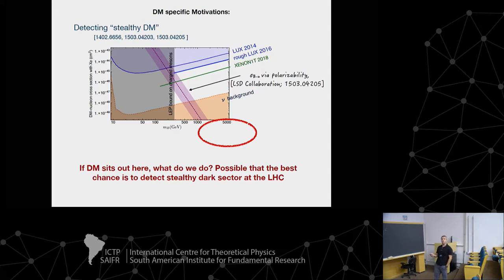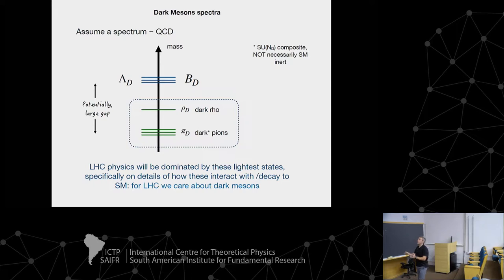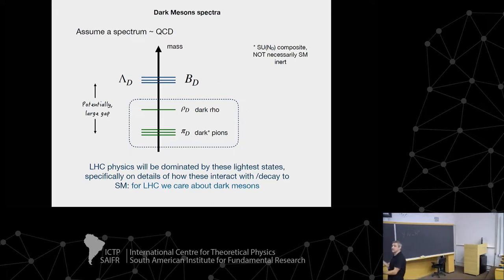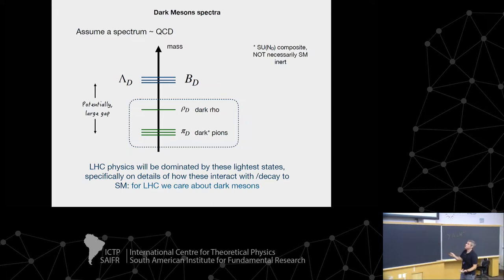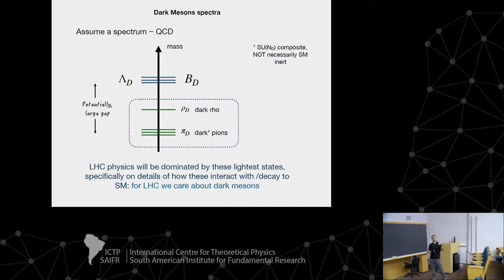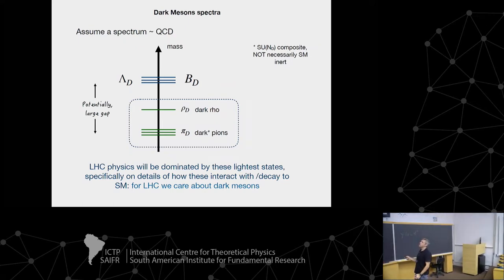So this is the motivation, one motivation. These guys are sort of the signature we would have at the LHC of what's going on here. So while that's the motivation, nothing I'm going to say for the rest of the talk cares about these baryons. At the LHC, I care about the lightest states that I'm going to make. And that's going to be these pseudoscalars, the dark pions, and any vector mesons that I've got.